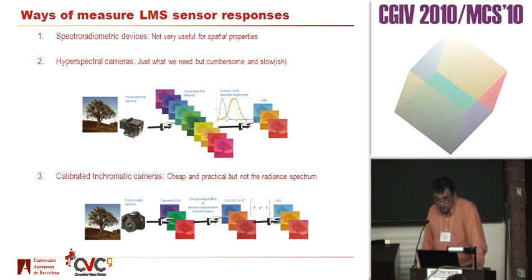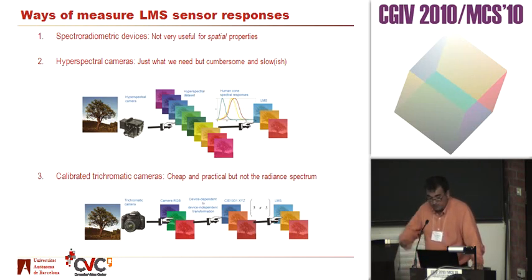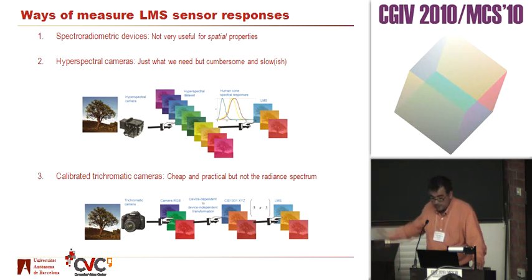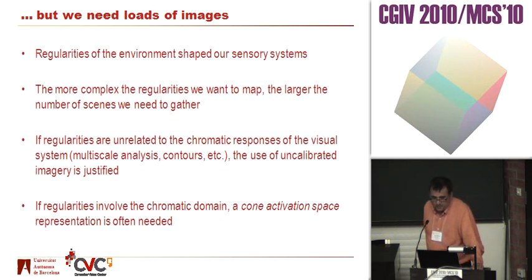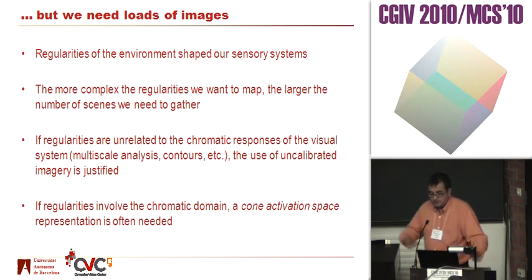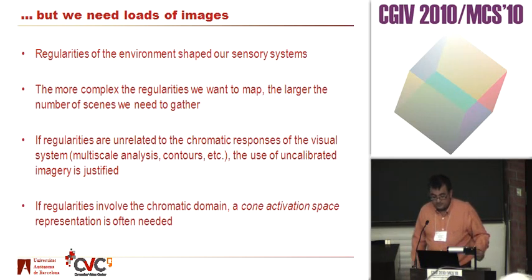The option we're trying now is to calibrate a trichromatic camera, which is cheap and practical. You don't get the full radiant spectrum for every pixel. Hyperspectral cameras are the best, but sometimes you need to explore regularities and how the regularities in the environment shape our sensory systems.